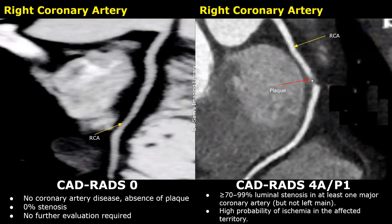CADRADS-4 indicates severe stenosis. It has two types: CADRADS-4A and 4B. In 4A, the stenosis is between 70 and 99% in at least one major coronary artery, such as the left anterior descending artery, left circumflex artery, or the right coronary artery, but not the left main coronary artery.